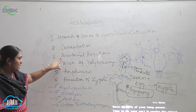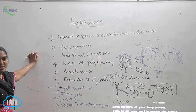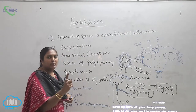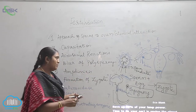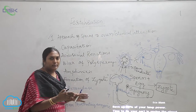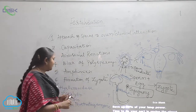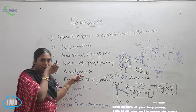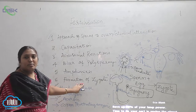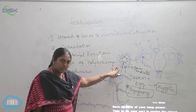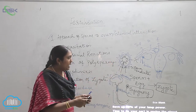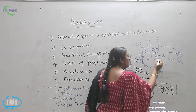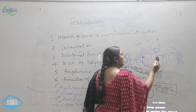Next is the block of polyspermy — just now explained. All sperms cannot penetrate at a time; only one sperm will enter. Poly means many, so many sperms cannot enter — this block is called the block of polyspermy. Next is amphimixes, which means the fusion of the gametes. The fusion of male and female gametes is called amphimixes. And the last one is the formation of zygote — after amphimixes, the zygote will be formed and implanted in the uterus.